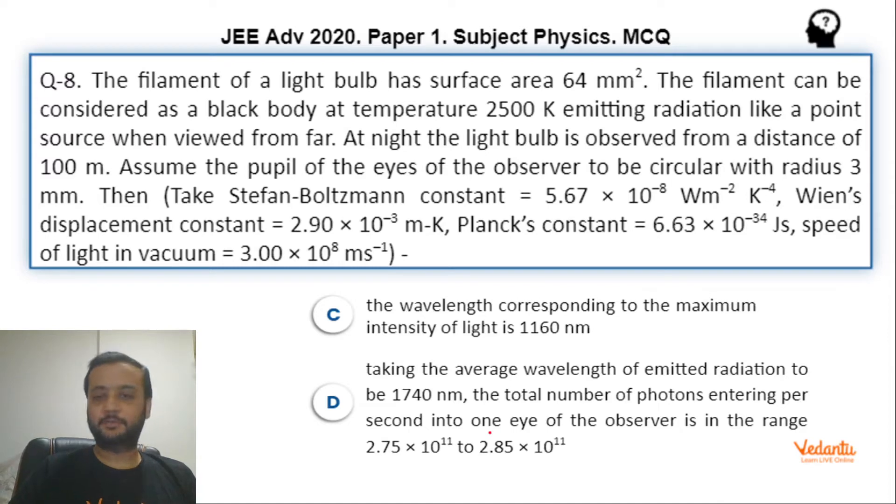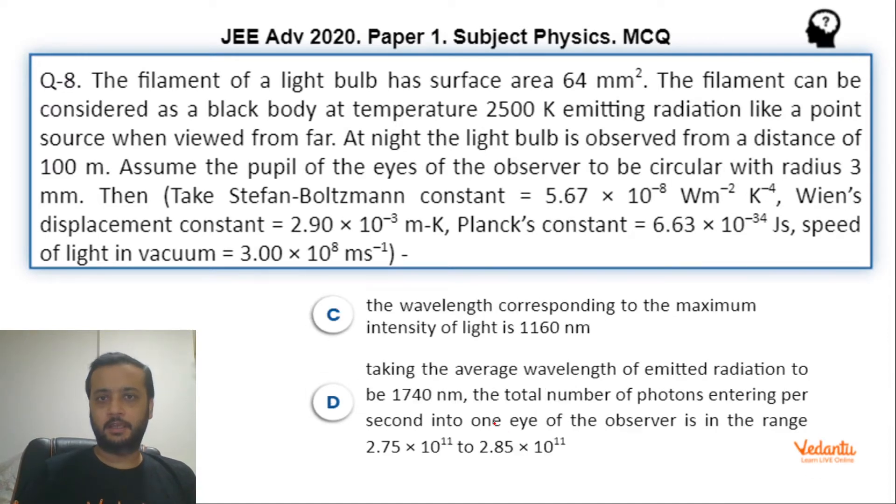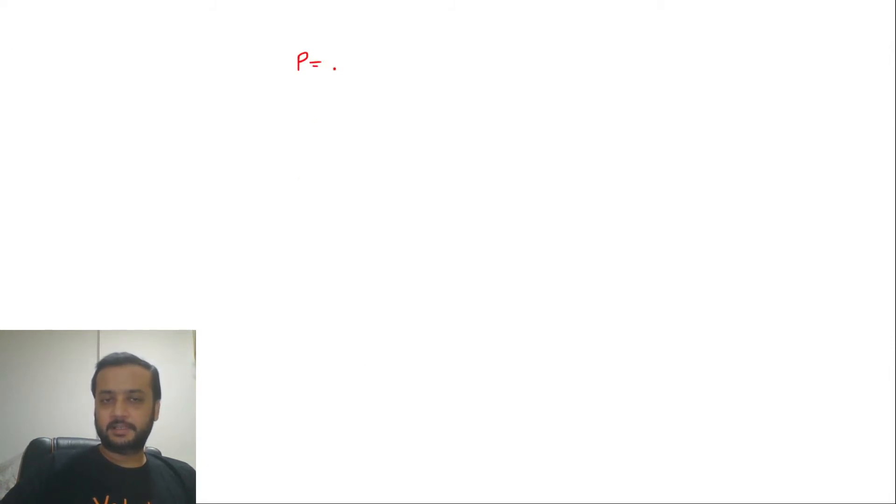Now, first of all, let's solve option A. Power we can straightforwardly say that Stefan's law E is sigma T to the power 4, power emitted per second.